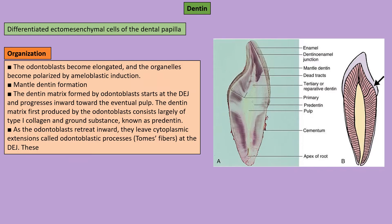Dentine is an elastic, avascular, mineralized tissue that is harder than bone but softer than enamel. It arises from ectomesenchymal cells of the dental papilla — dental papilla cells differentiate into odontoblasts by ameloblastic induction. Dentine matrix formation starts at the DEJ and progresses slowly towards the pulp inward. The first dentine matrix formed by odontoblasts, which contains mainly type I collagen, is called predentine.